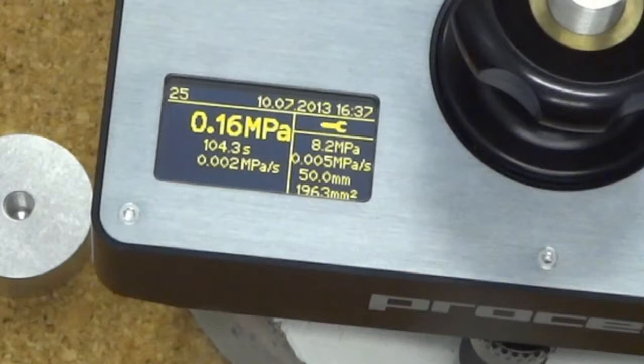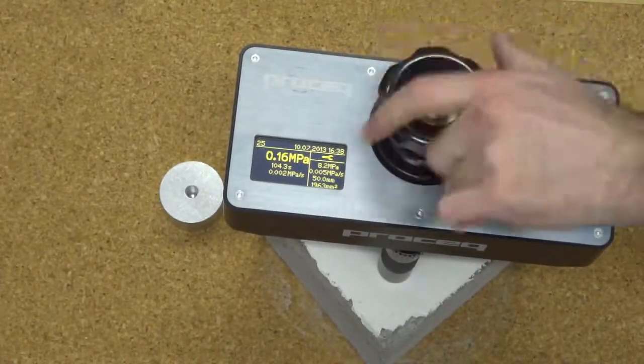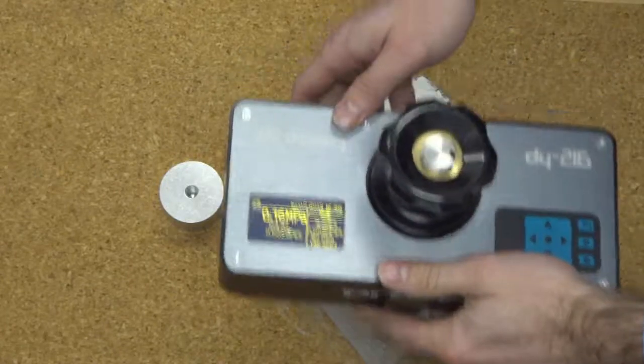So it's finished, its maximum was 0.16 MPa, 104.3 seconds to take the test, and we can now remove the Di2.